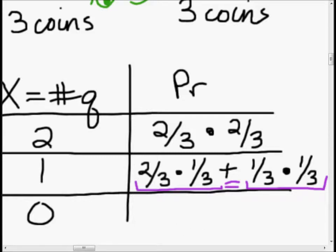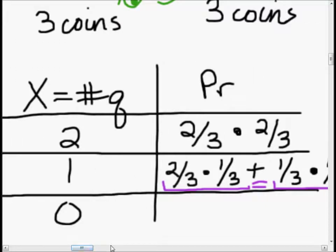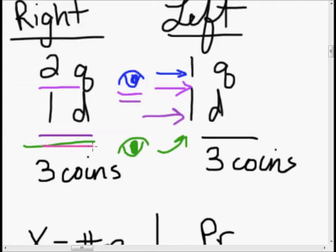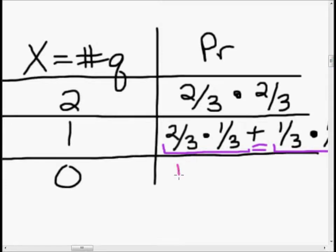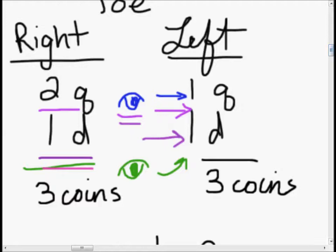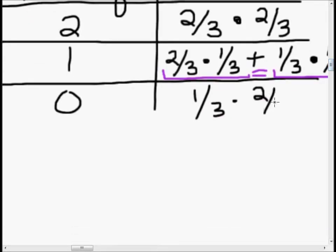Our last step: how do we get no quarters at all? In his first pocket he pulls out a dime — that's a one out of three chance. He eyeballs it and puts it in his left hand pocket, so now he has two dimes and one quarter. We don't want him to get any quarters, so from the left pocket he must also not get a quarter — that's a two thirds chance. And that's our chart — the probability density function.